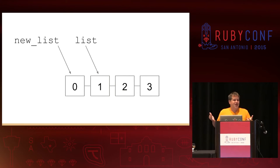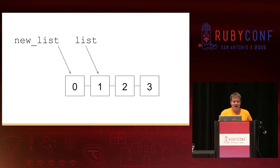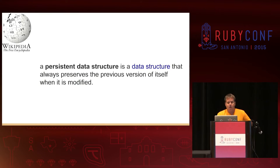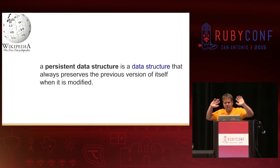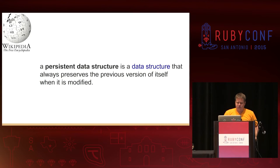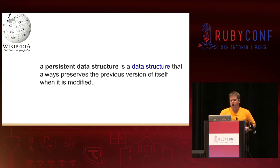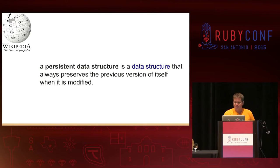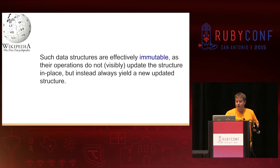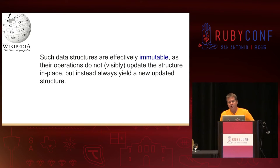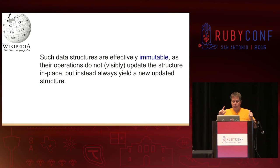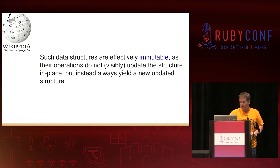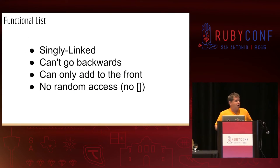Straight from Wikipedia: a persistent data structure is a data structure that always preserves the previous version of itself when it is modified. Such data structures are effectively immutable as their operations do not visibly update the structure in place, but instead always yield a new updated structure.